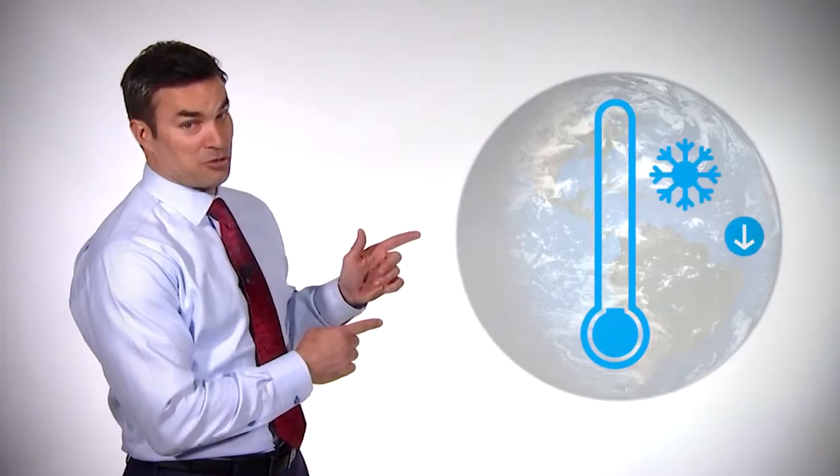Now this is a balancing act. Without the greenhouse effect and carbon dioxide, the Earth would be about 60 degrees colder, making our planet one tough place to live.